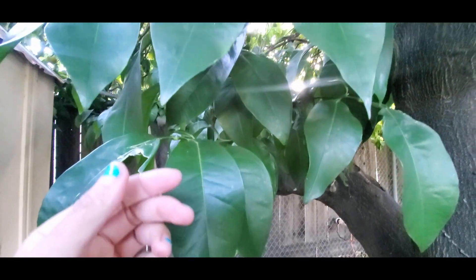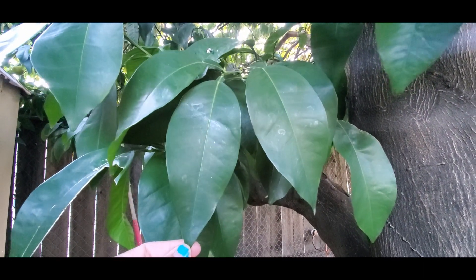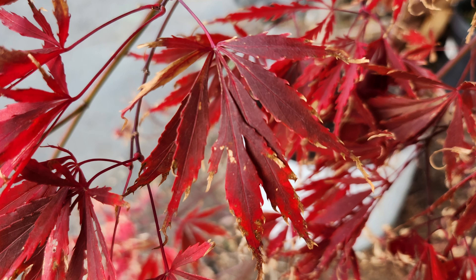So let's start with a leaf. We know the macro features of a leaf like the blade, the petiole, veins, but what is it that actually makes up a leaf?